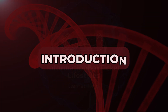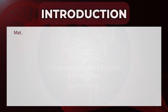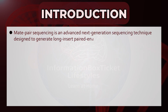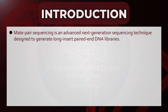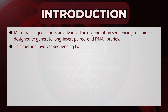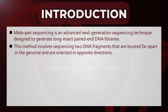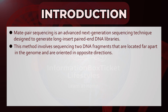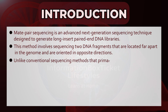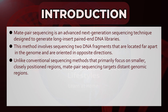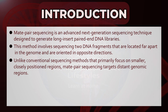Introduction to Mate Pair Sequencing. Mate pair sequencing is an advanced next-generation sequencing technique designed to generate long-insert paired-end DNA libraries. This method involves sequencing two DNA fragments that are located far apart in the genome and are oriented in opposite directions. Unlike conventional sequencing methods that primarily focus on smaller, closely positioned regions, mate pair sequencing targets distant genomic regions.